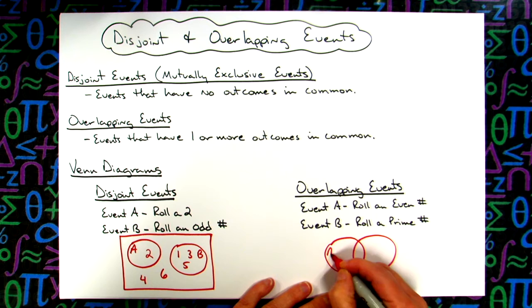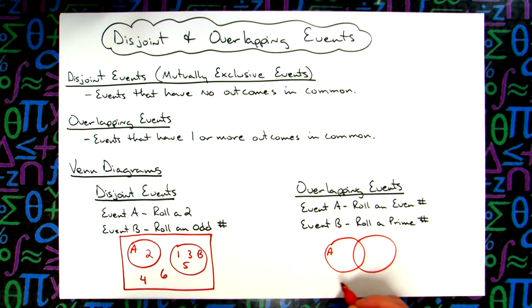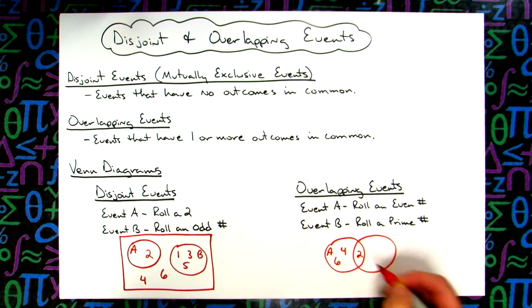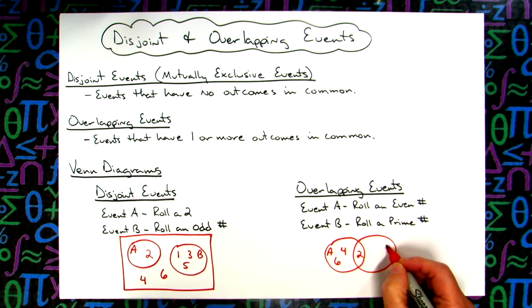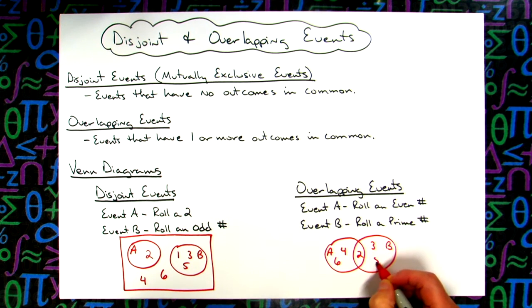Event A, rolling an even number - all my even numbers on the dice are two, four, and six. Four and six are going to go here. The two is going to have to go in the middle because that is also a prime number. So when I set up my Venn diagram for event B, which is rolling a prime number, the prime numbers on the dice are two, three, and five.